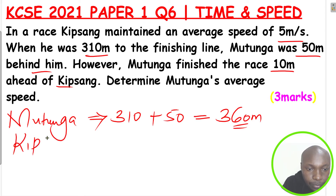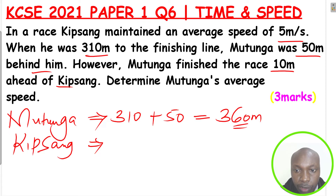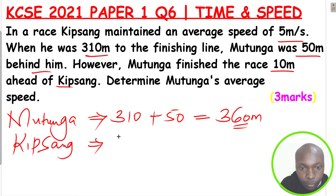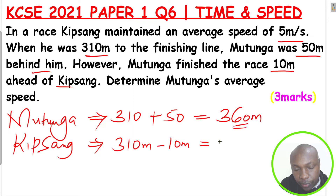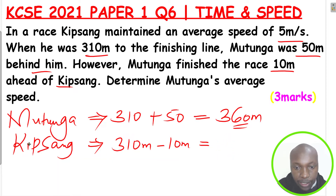For Kip Sang, Mutunga finished the race 10 meters ahead of Kip Sang, and Kip Sang was at 310 meters to the finishing line. So, if Mutunga finished 10 meters ahead, it means Kip Sang moved 310 meters minus 10 meters — he was not yet at the end by the time Mutunga was finishing. So Kip Sang was 10 meters behind. The distance Kip Sang covered is 310 minus 10, which equals 300 meters.